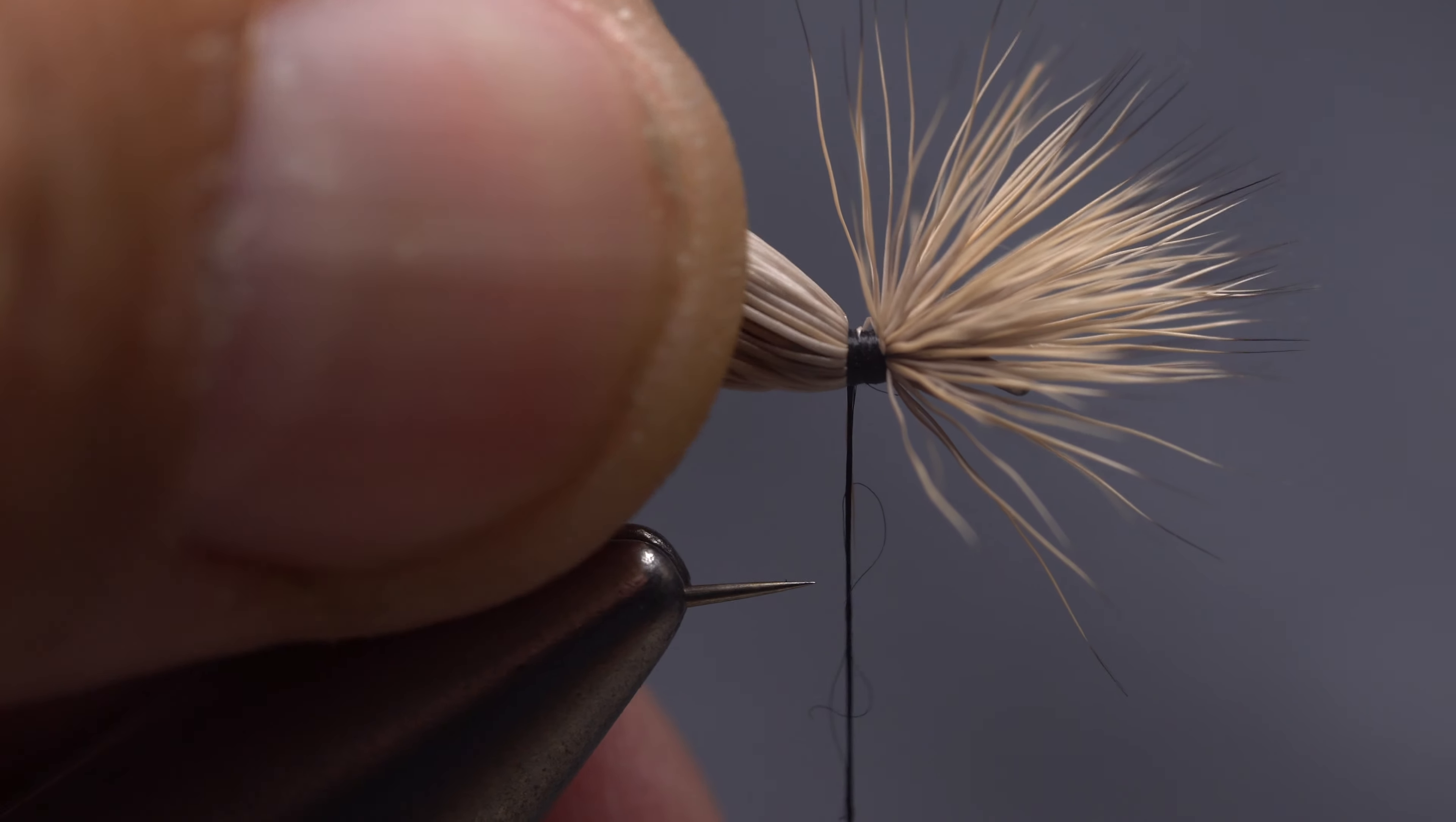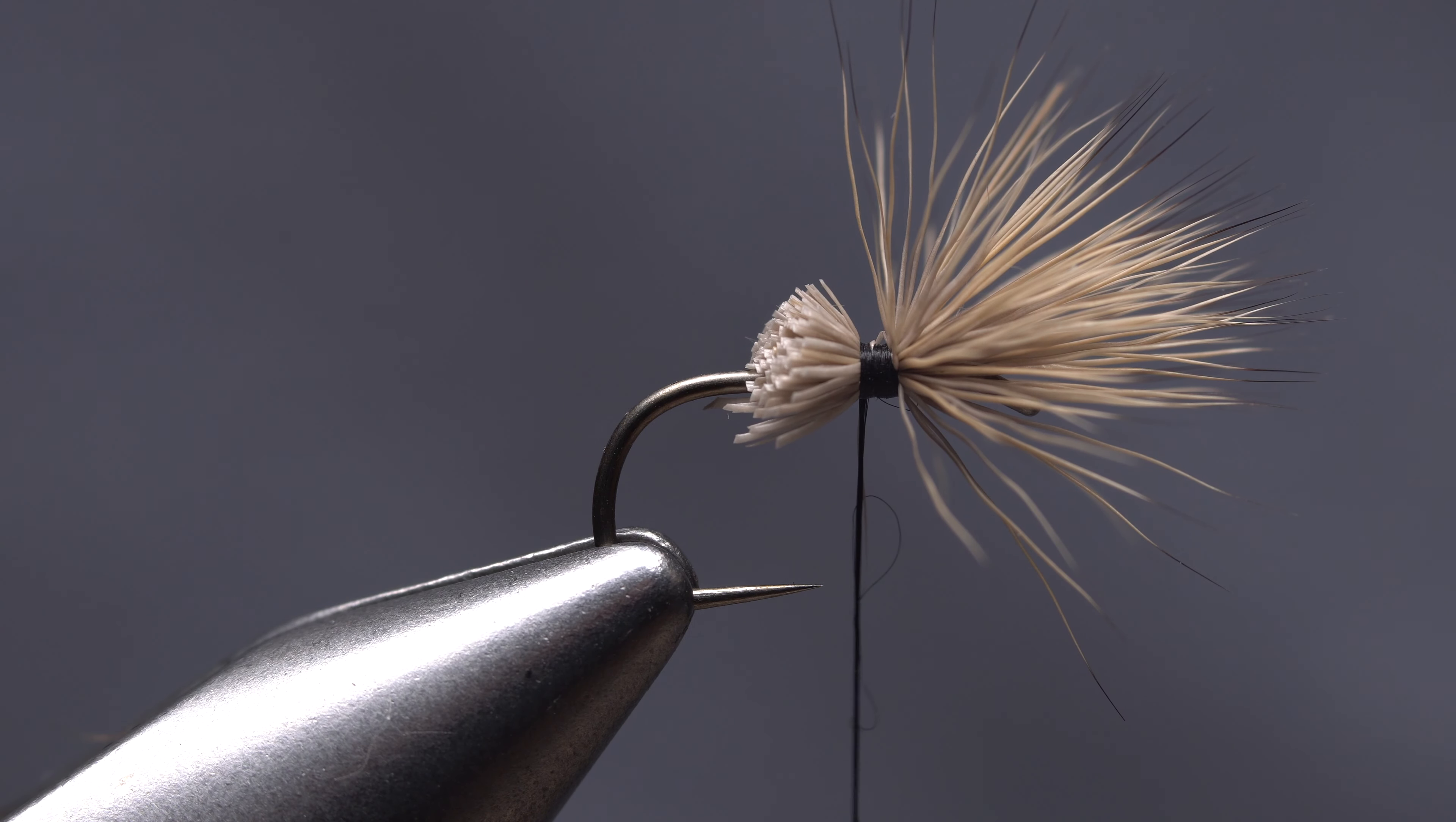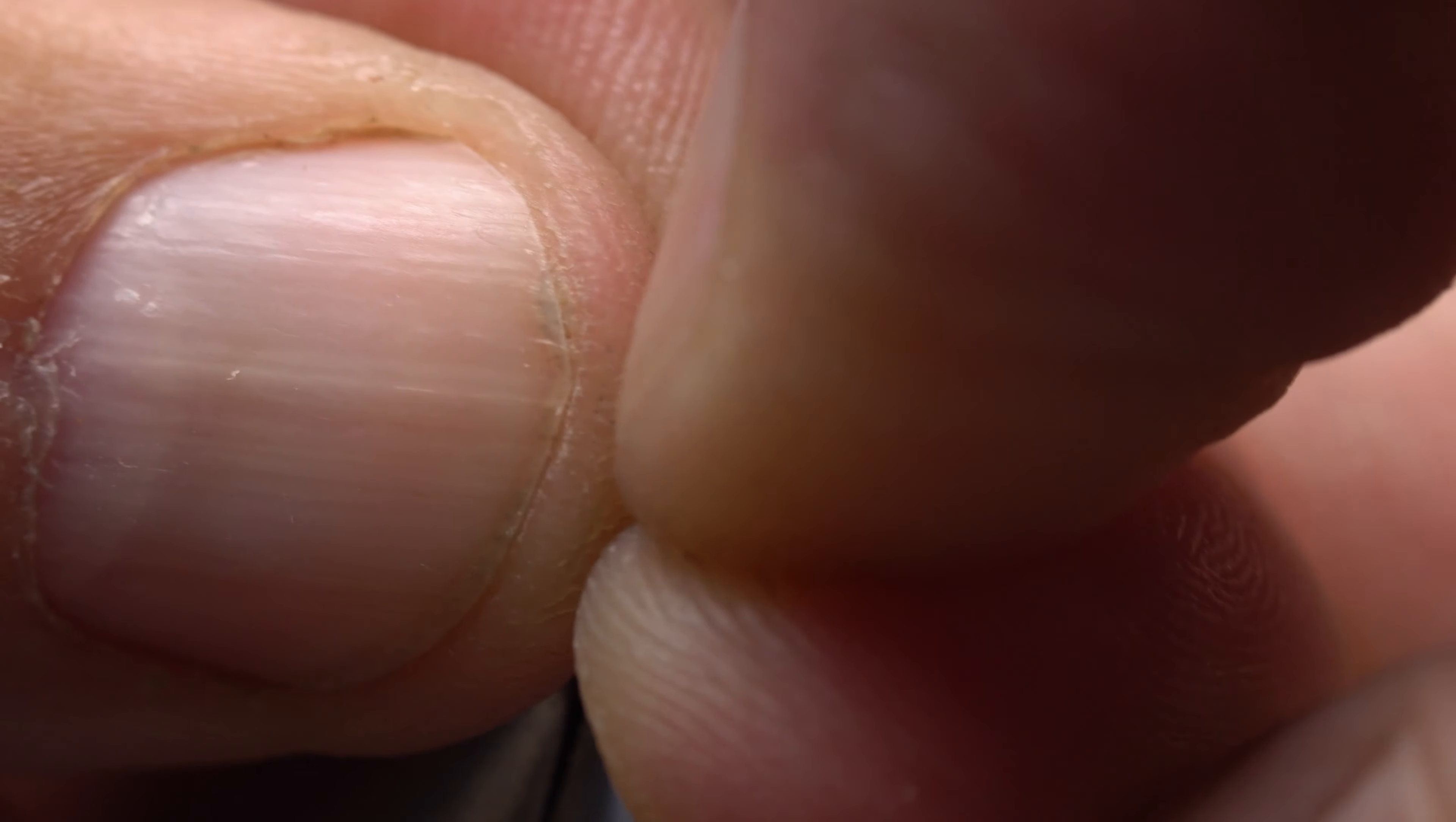While maintaining the pinch, snip the deer hair off at an angle. Pull the hair up and back, then use the thumbnail of your right hand to kind of crease it in a vertical position.